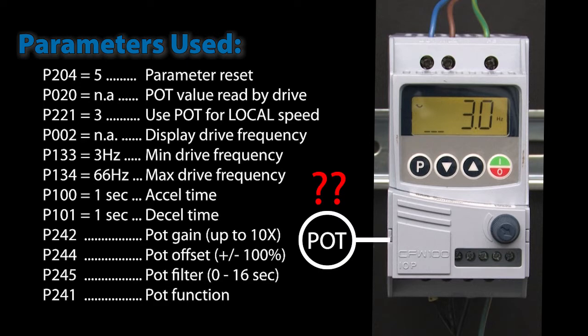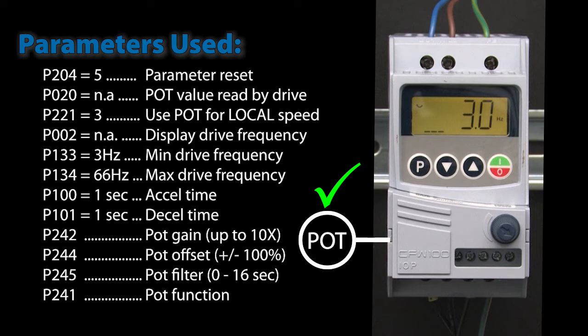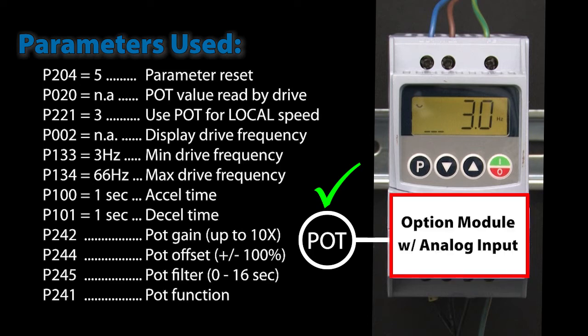Can you use your own external potentiometer? Sure. But since you'll be connecting it to an analog input, you'll need to change parameter 221 or 222 if you are in remote mode to whichever analog input signal you are using and set up that analog input channel accordingly. Of course if you are using a CFW-100 drive then you'll need an option module that has an analog input because the base CFW-100 drive doesn't have an analog input.